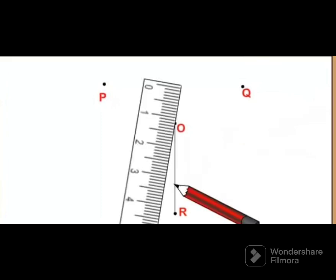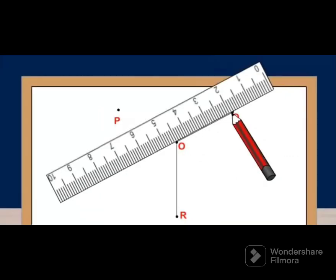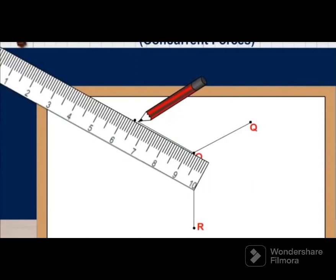Draw OA, OB, OC and their lines for the weights P, Q, R, using a scale of 50 grams equal to 1 centimeter. Using lines OA and OB as the basis, draw a parallelogram OADB and connect the diagonal OD.